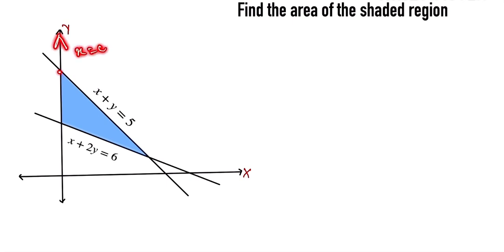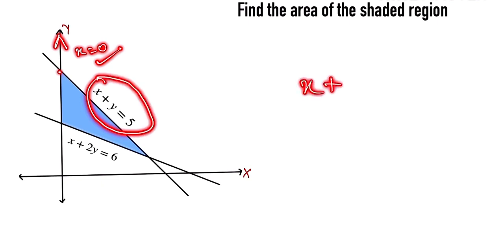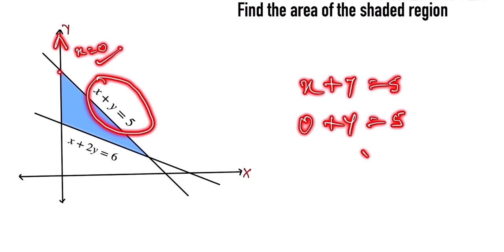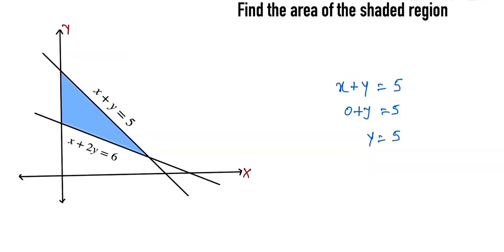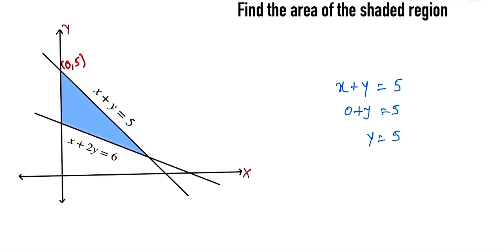Notice this point — it lies on the y-axis, so the value of x must be equal to 0. We put x equal to 0 into the equation x plus y is equal to 5, so y is equal to 5. We can write this point as (0, 5).